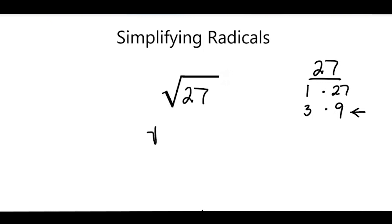So what I'll do is rewrite this as the square root of 9 times the square root of 3. And since I know the square root of 9, which is 3, I'll rewrite this as 3 times the square root of 3. And that is how you simplify radicals.